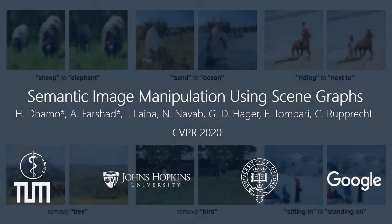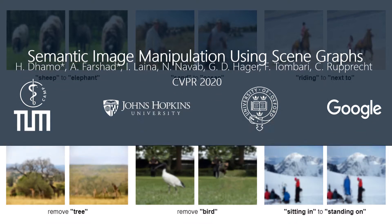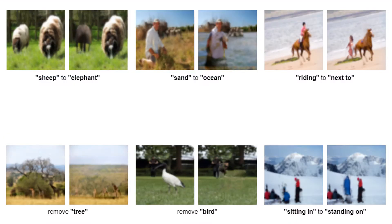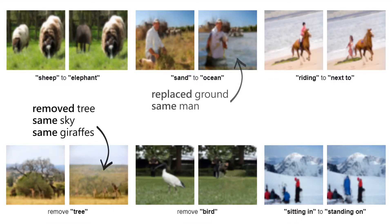We present our work on semantic image manipulation using scene graphs. The goal is to change object constellations in an image while retaining the original appearance and style.